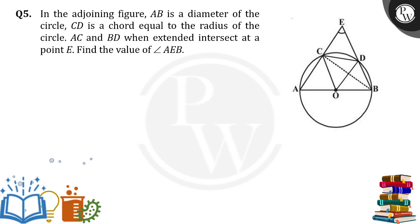Hello everyone. AB is the diameter of a circle, C is a chord equal to the radius of the circle. AC and BC when extended intersect at a point D. Find the value of angle ADB.